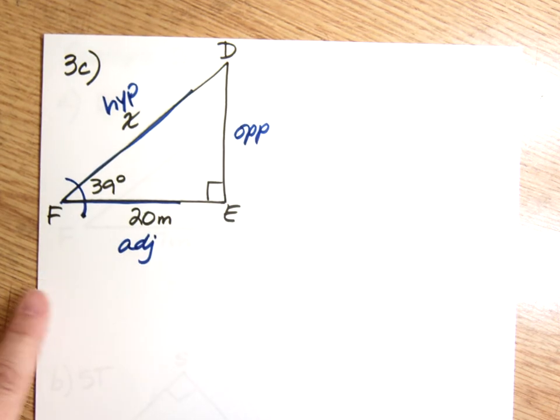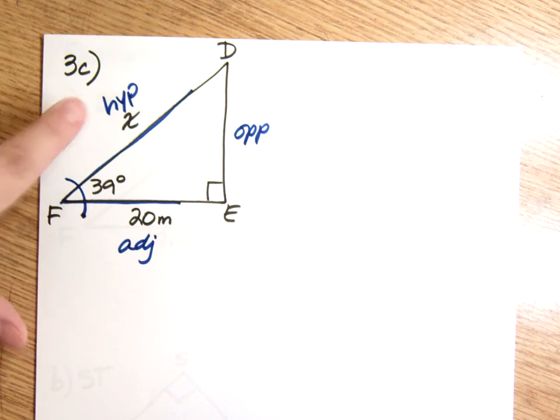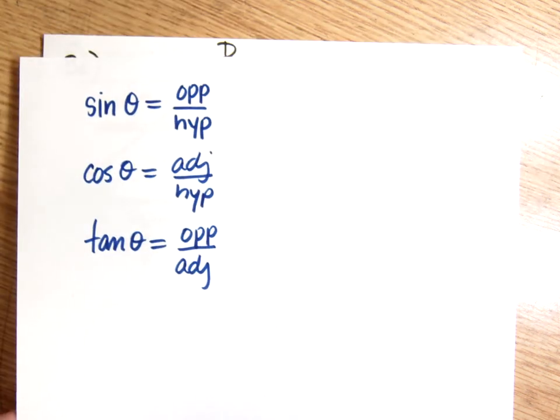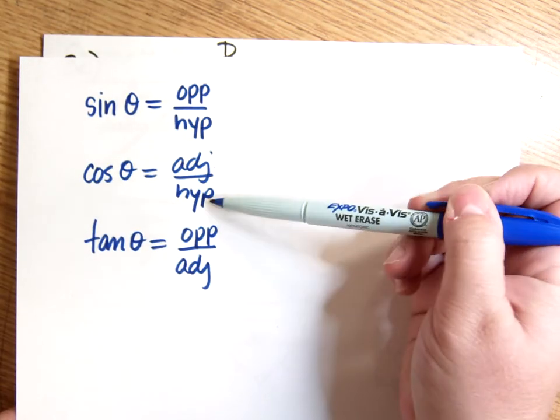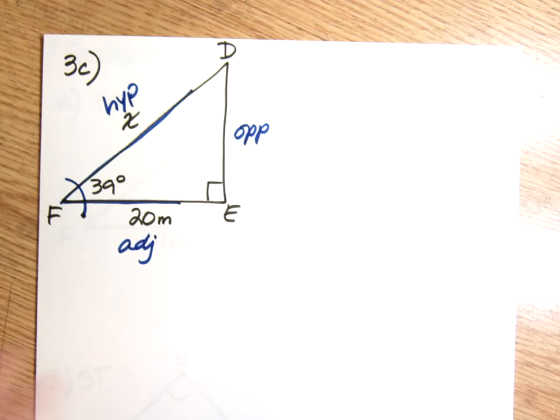So this time I'm working with adjacent, because that's the side I have, and hypotenuse because that's the side I need. And out of my three trig functions, it's cosine that works with adjacent and hypotenuse. So that's what I'm going to use.